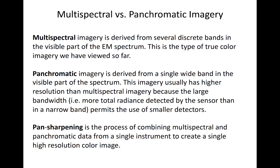Pan-sharpening is the act of using the red, green, blue, and panchromatic channels together to approximately produce an accurate representation of true surface color at the high resolution of the panchromatic band.